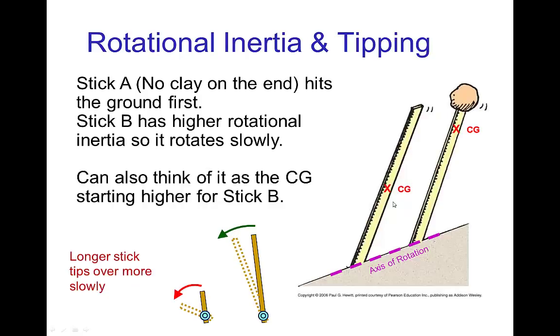Now there's two ways to think about this. The one with the lump of clay on the end has a large amount of mass far from the axis of rotation. The axis of rotation for tipping motion would be the ground. Another way to think of it is that if we locate the center of gravity, the center of gravity of the first stick is just in the middle of the stick. The center of gravity when we have this weight on the end for the second stick is near the top.